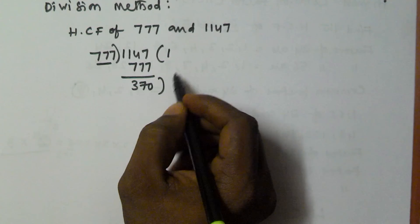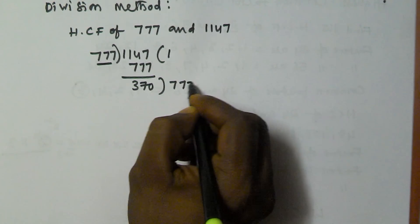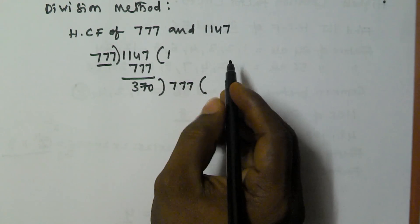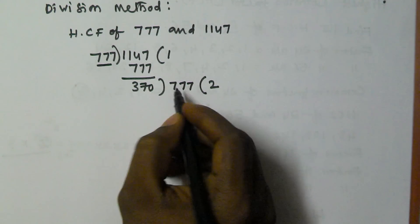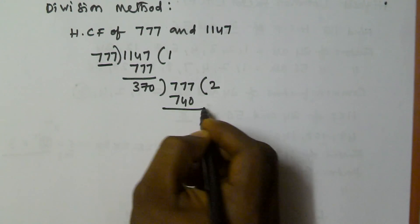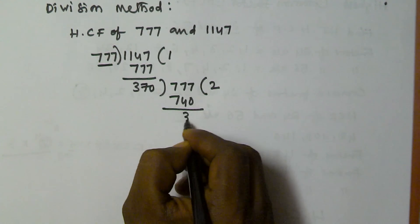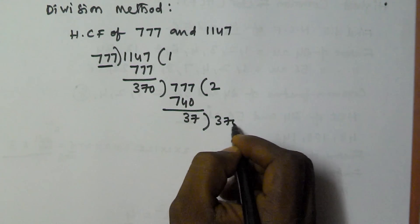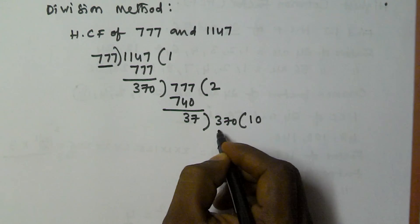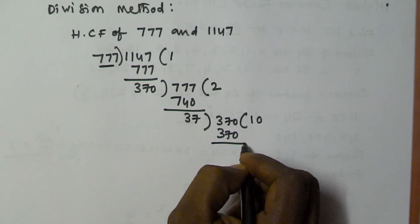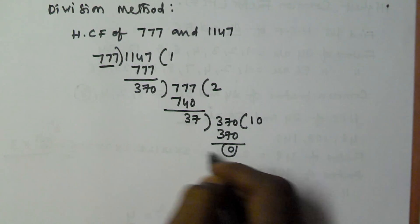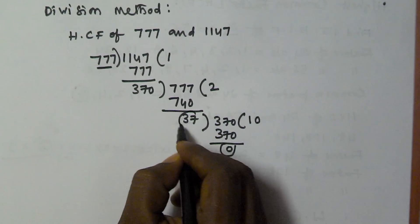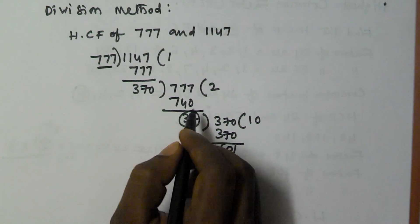Next, the divisor becomes the new dividend, so 777 comes down. We then divide 777 by 370, which goes 2 times to give 740, leaving a remainder of 37. We then divide 370 by 37, which goes 10 times exactly, giving a remainder of 0. We repeat this procedure until we get remainder 0, and the last divisor becomes the HCF.